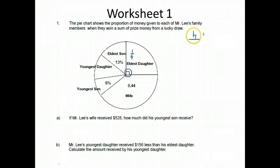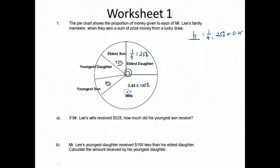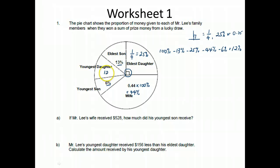When it is a right angle, we know it is either one quarter, 25%, or 0.25. So we put one quarter here. Now, we realize the pie chart units are in percentage. So one quarter is 25%. The wife here is in decimal, so we can change the decimal to percentage by multiplying by 100%, and we get 44%.